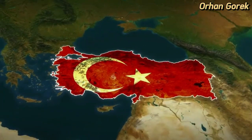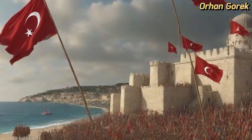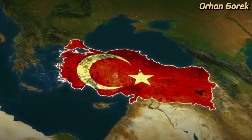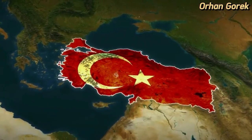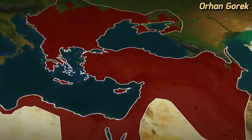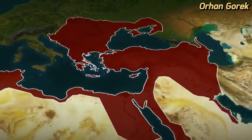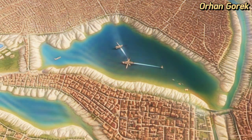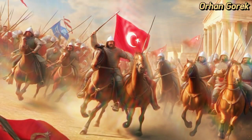One of the primary internal factors that contributed to the collapse of the Ottoman Empire was political instability. As the empire expanded and grew in size, it became increasingly difficult to maintain control over its diverse territories. This led to power struggles, succession disputes, and weak leadership, which weakened central authority and hindered effective governance.